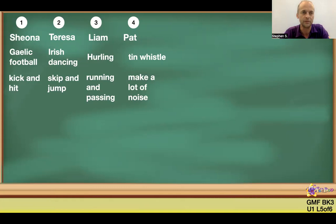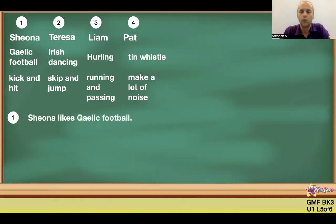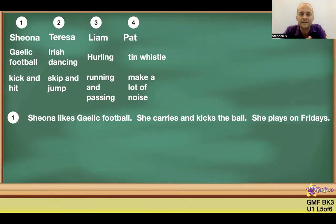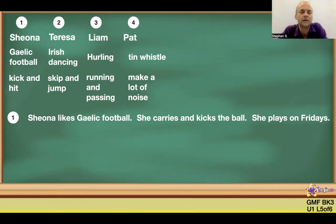By this stage, students should be able to say Shona, Teresa, Liam, and Pat with no problem — Gaelic football, Irish dancing, hurling, tennis, kick, skip, jump, run — all with no problem. If they are unable to say these words properly, then they can't move on. The next activity is making sentences. I've written the first sentence on the board as a model. In Give Me Five Book 3 and above, students need to use their English, not just repeat content. I'm creating a sentence pattern for them to follow.